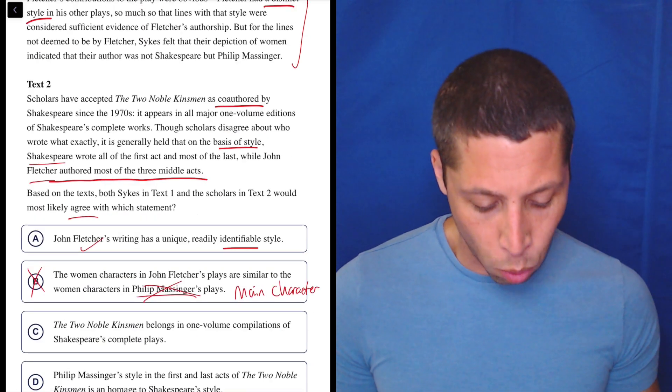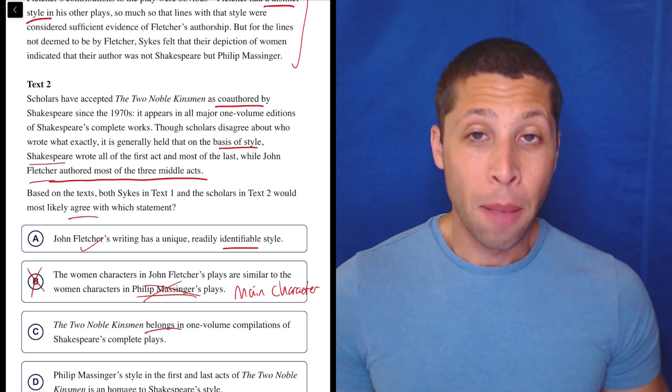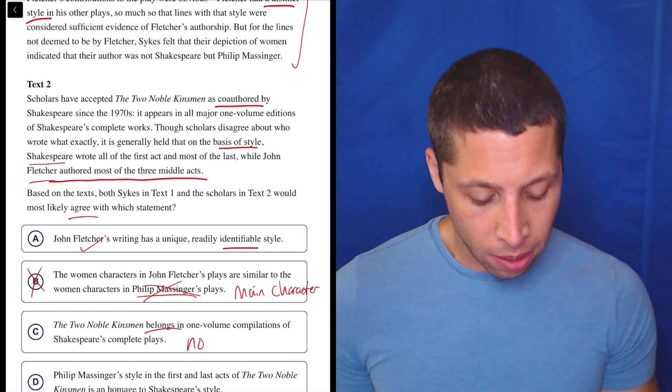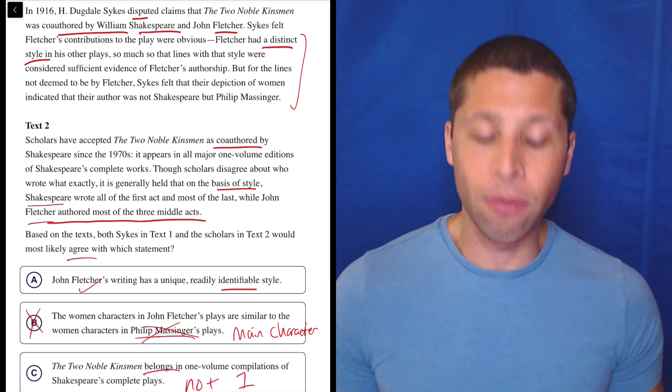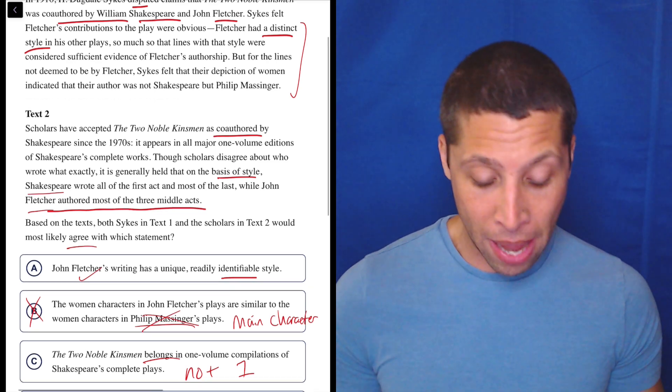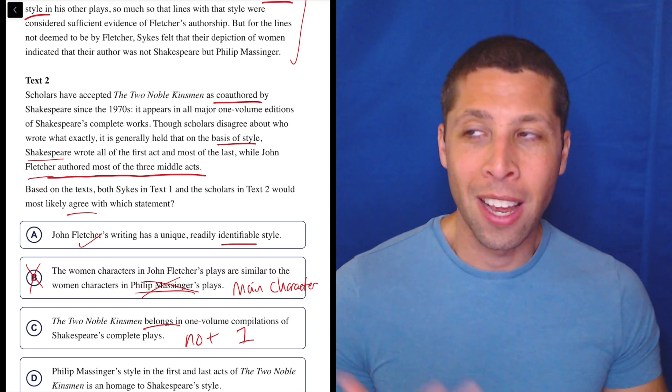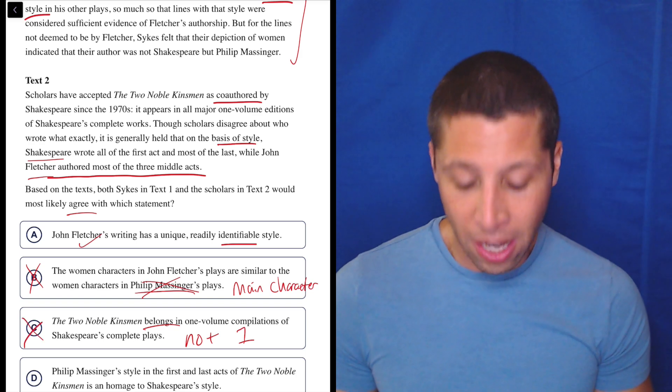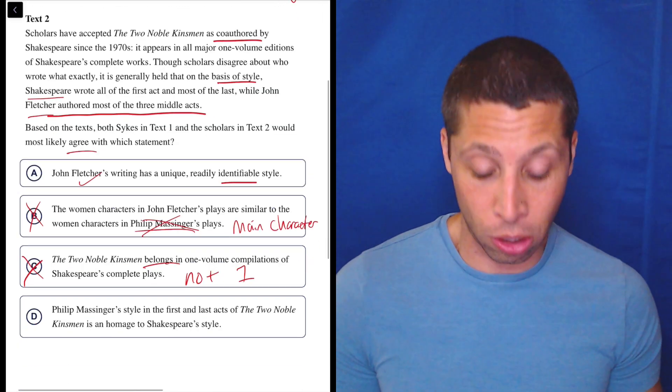Choice C: The Two Noble Kinsmen belongs in one-volume compilations of Shakespeare's complete plays. No, because Passage 1 disagrees with that, right? It says Shakespeare's not involved—it wasn't him, it was this other guy, Massinger. So why would we put this play in Shakespeare's complete works if it's not by Shakespeare? This is actually getting to the main idea of the passages that they disagree on.